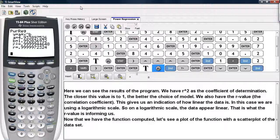So on a logarithmic scale, the data appears linear. That is why the R value is produced and this is what it's telling us.